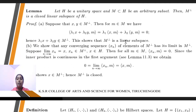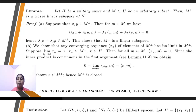Next, the lemma: let H be a unitary space, M be an arbitrary subset contained in H. Then the orthogonal complement M⊥ is a closed linear subspace of H.